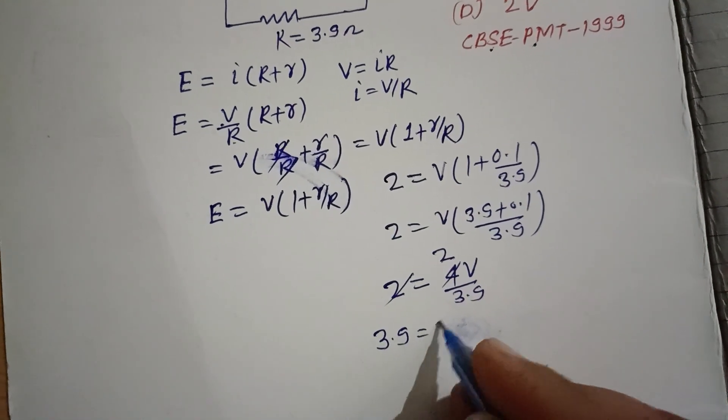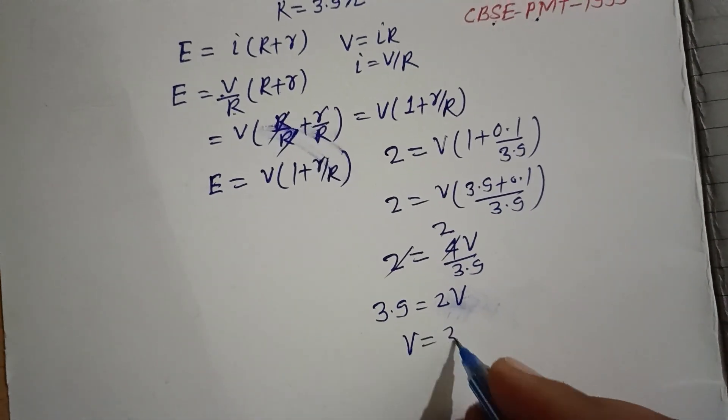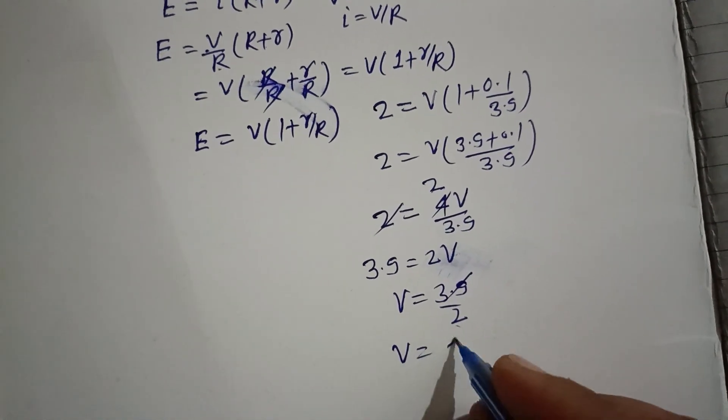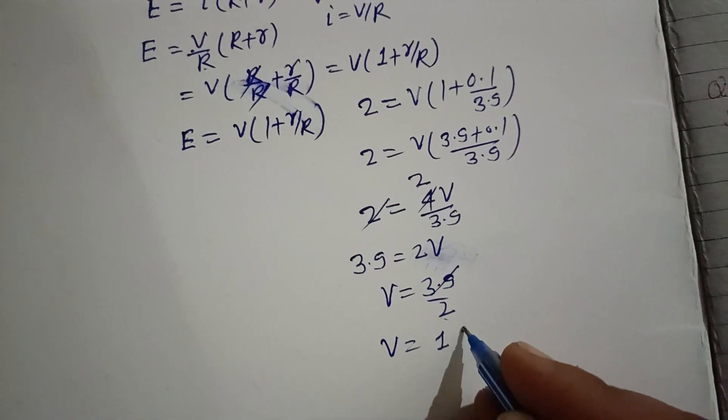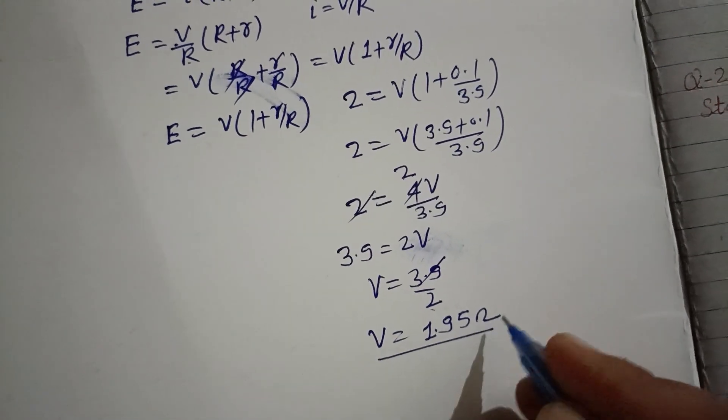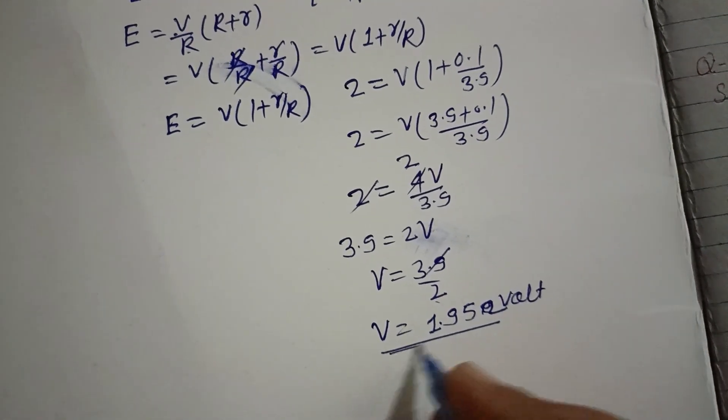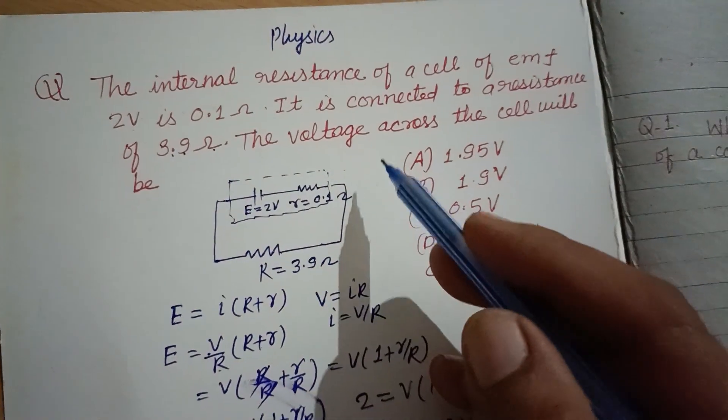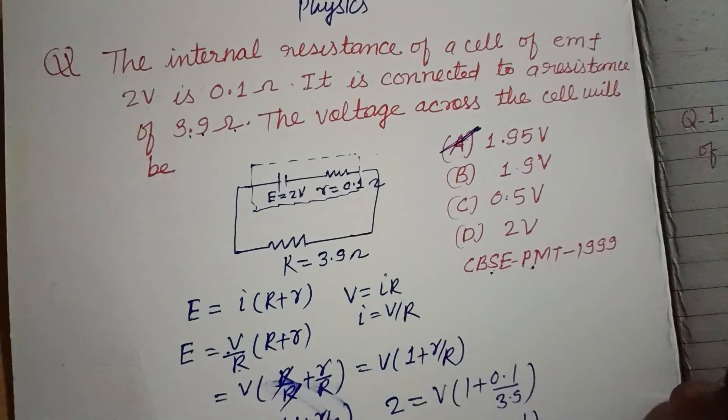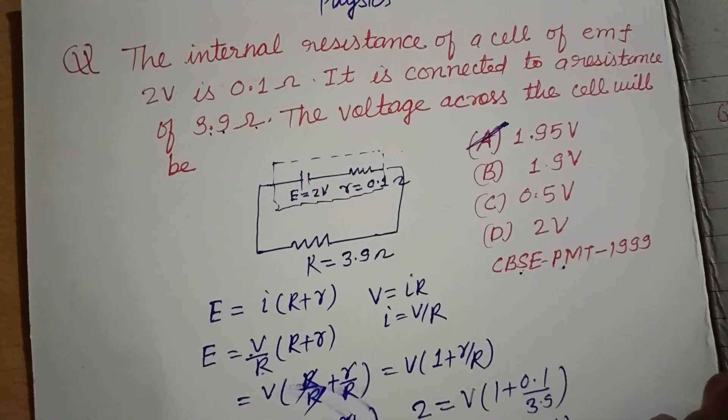So this will be 1.95 volt. Therefore the voltage across the cell is 1.95 volt which is given in option A.